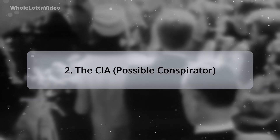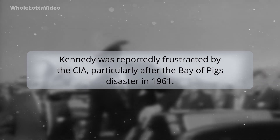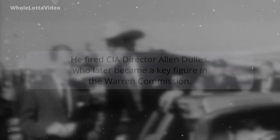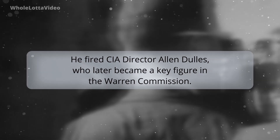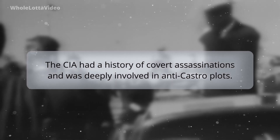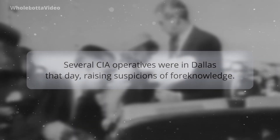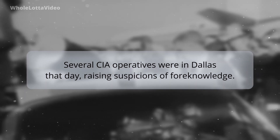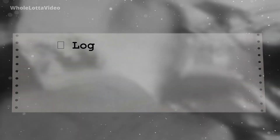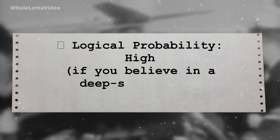Two: The CIA — possible conspirator. Kennedy was reportedly frustrated by the CIA, particularly after the Bay of Pigs disaster in 1961. He fired CIA director Allen Dulles, who later became a key figure in the Warren Commission. The CIA had a history of covert assassinations and was deeply involved in anti-Castro plots. Several CIA operatives were in Dallas that day, raising suspicions of foreknowledge. Logical probability: high, if you believe in a rogue CIA elements theory.